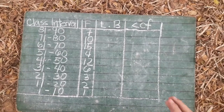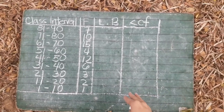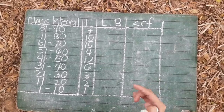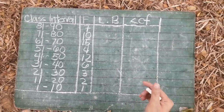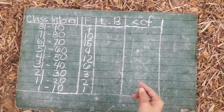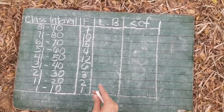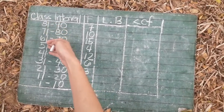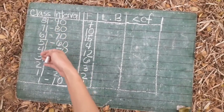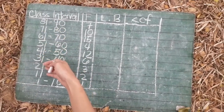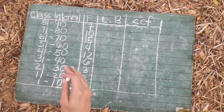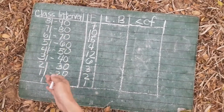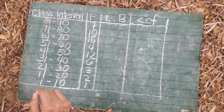Now I'll teach you how to get the lower boundary. All you have to do is just take a look at the first column in the interval, which is 81, 71, 61, 51, 41, 31, 21, 11, and 1. All you have to do when you get all of that is just minus 0.5.